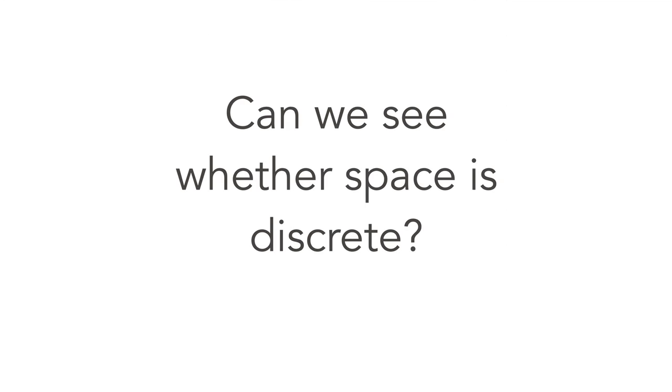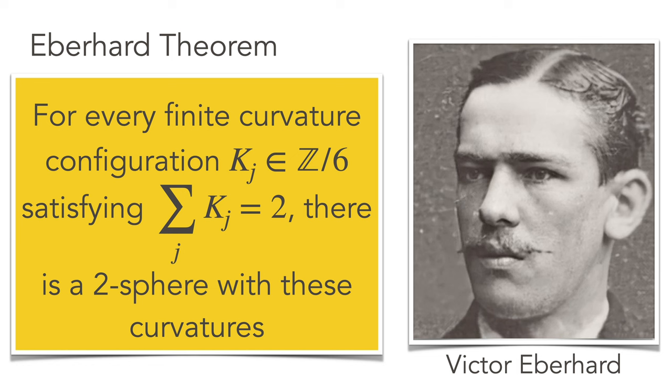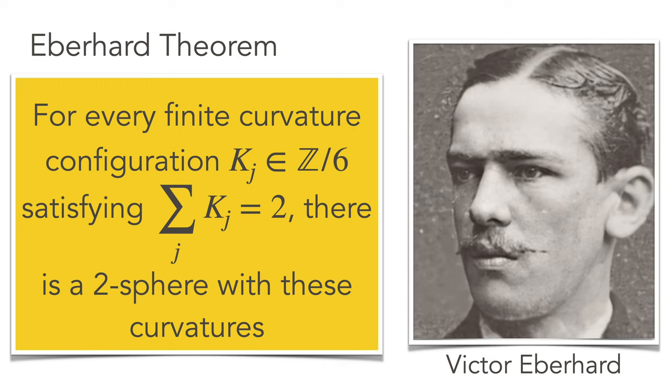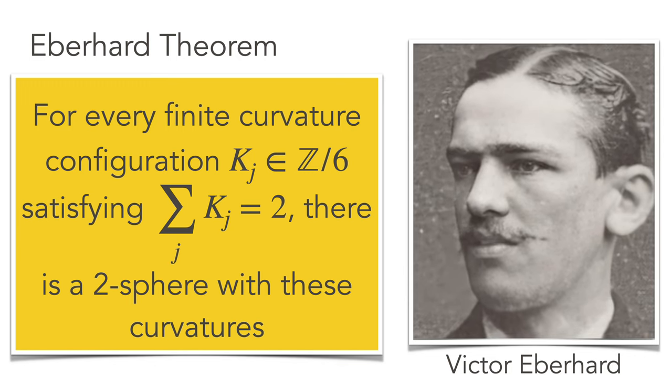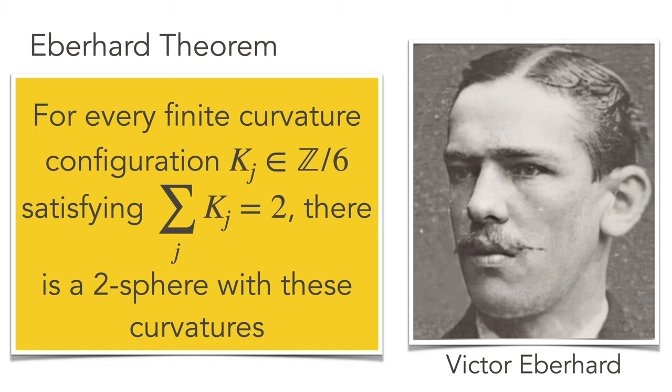Finally, something about whether we can see if space is discrete. Are there detectable features of discrete space? People have thought about this. Some of these features may be too small to be seen because this is on Planck scale. But there are geometric indications. First, I want to illustrate this with a theorem, Eberhard's theorem from 150 years ago. I like Eberhard because he was a blind mathematician, a blind geometer, pretty amazing. He proved an amazing theorem: if you take a two-dimensional sphere and look at the curvature configurations that sum to two, then you can realize this.